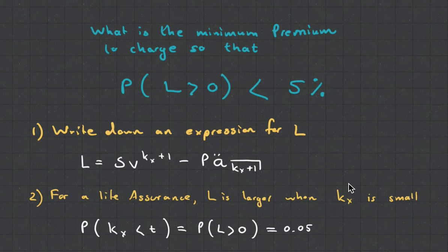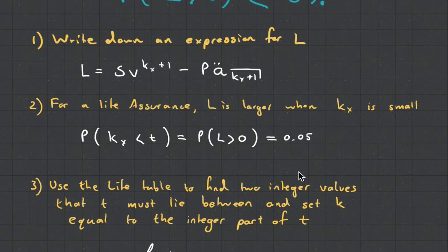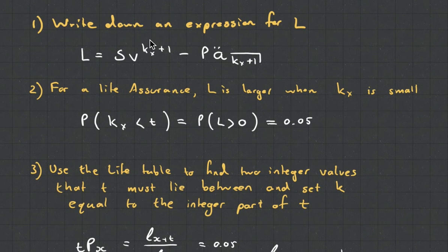What is quite bad, like I said in the previous videos, are these type of questions. What is the minimum premium to charge so that the probability that your loss variable is greater than zero and we want that probability to be less than 5%. So, what I've got here are the steps that we need to do. There's four of them. I'll run through them quickly with you.